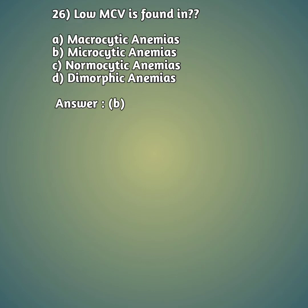Question 26: Low MCV is found in — option A: macrocytic anemia, option B: microcytic anemia, option C: normocytic anemia, option D: dimorphic anemia. The right answer is option B, microcytic anemia.